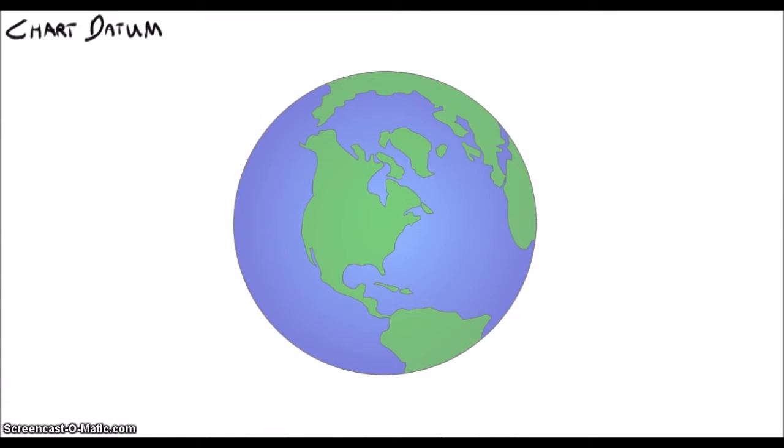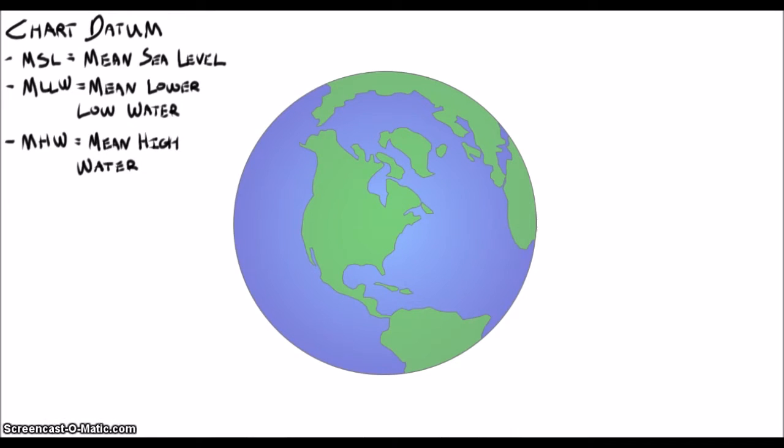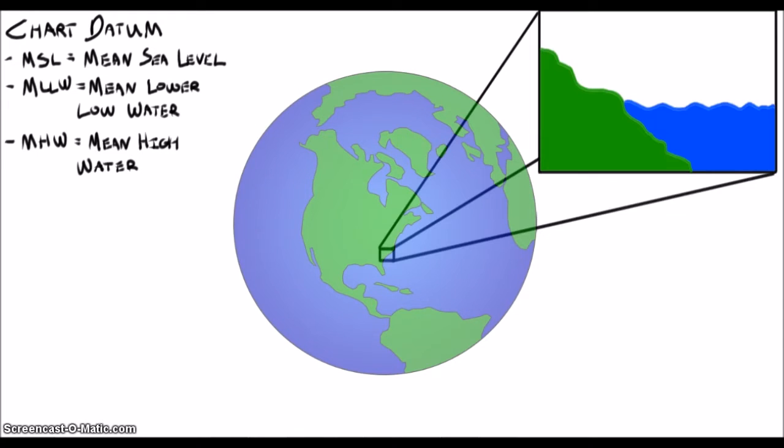Our chart datums are typically tidal datums. Mean sea level, mean lower low water, and mean high water are all local water level datums, based on long-term observations of the water level at a particular point.